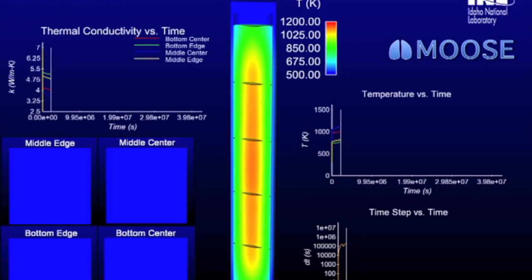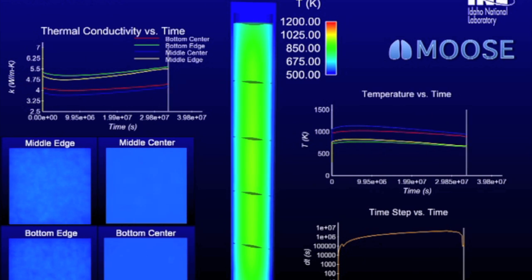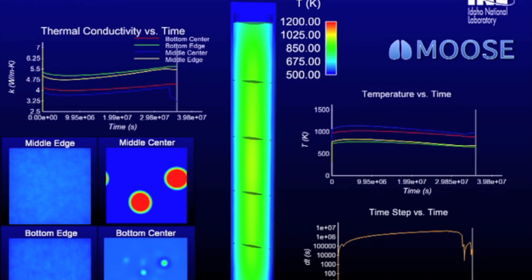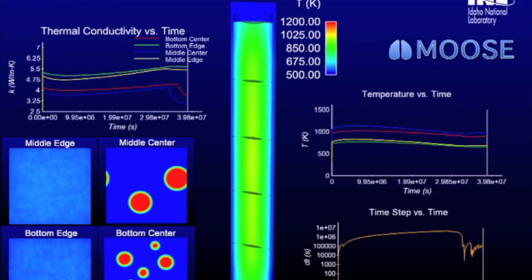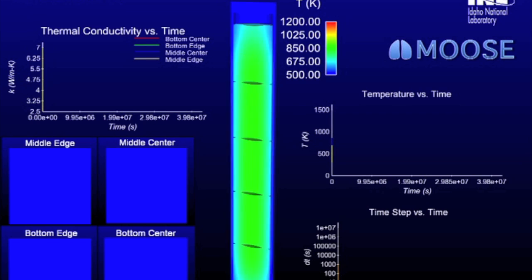In the top left, we're actually showing the thermal conductivity of the nuclear fuel over time at each of those four positions. As the microstructure changes, it'll actually impact one of the basic properties of the material, which is its thermal conductivity, its ability to move heat through the material.